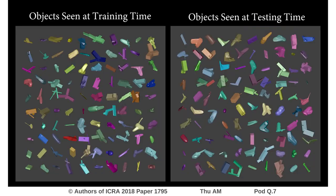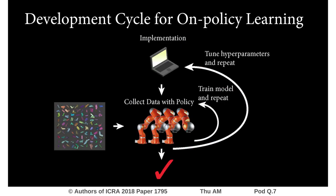An important criteria for deploying learning-based grasping systems is generalization, or the ability to grasp objects that are not seen during training. Generalization typically requires training on a large variety of objects and scenes. This presents challenges for on-policy learning algorithms, which during training and data collection must revisit a large variety of data.